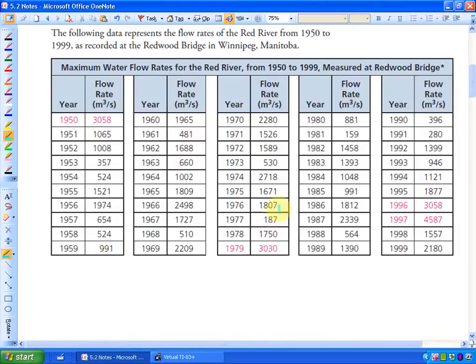Identify the lowest flow rate and the greatest flow rate, because then we know the range or dispersion for this. So as I sort through this information, what I notice is that the lowest flow rate is 159, I don't think I see a lower number than that. And I think the highest flow rate is 4587.